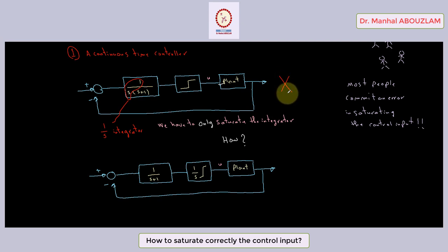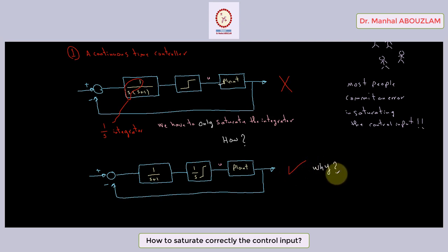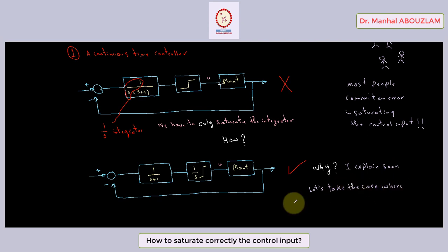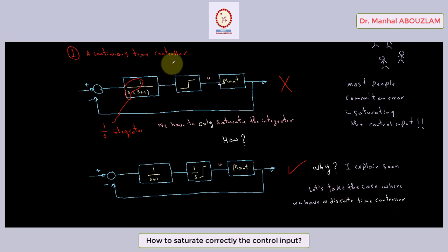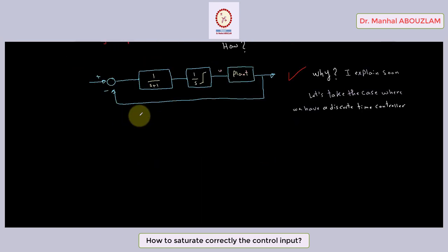This approach — putting saturation after the controller — is not correct. We have to saturate just the integrator. Now let's take a case where we have a discrete-time controller. We already discussed the continuous-time case; now we will discuss the discrete-time case.